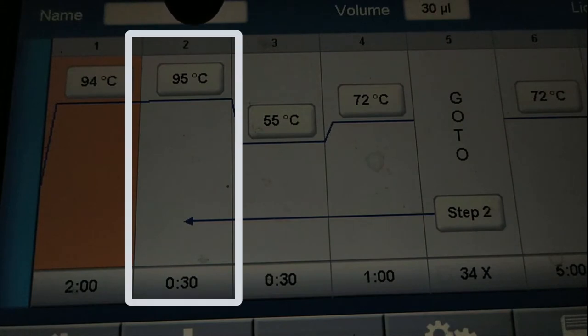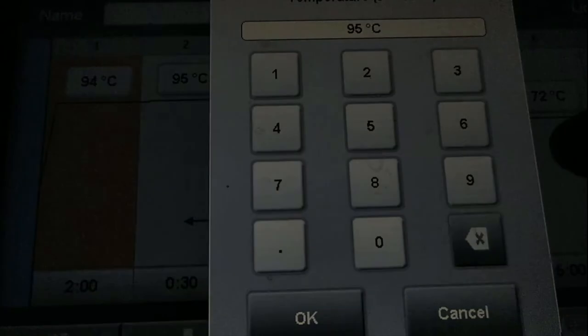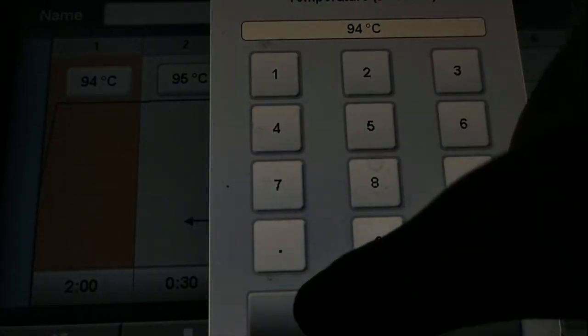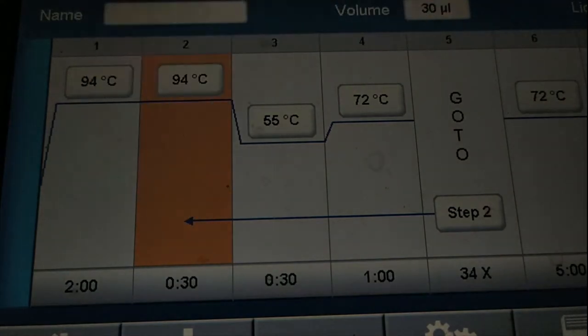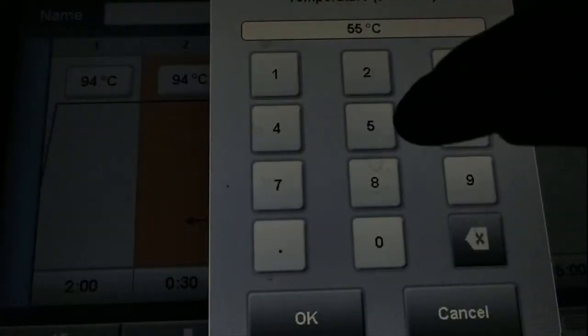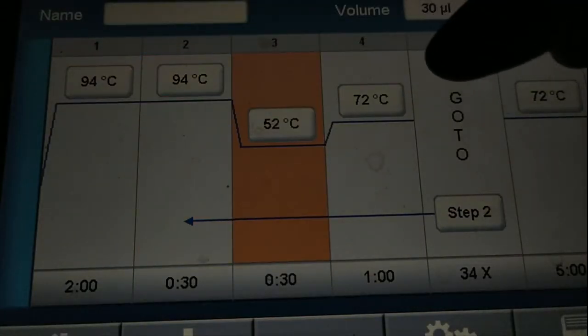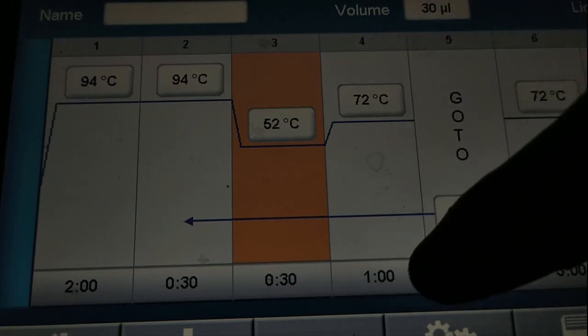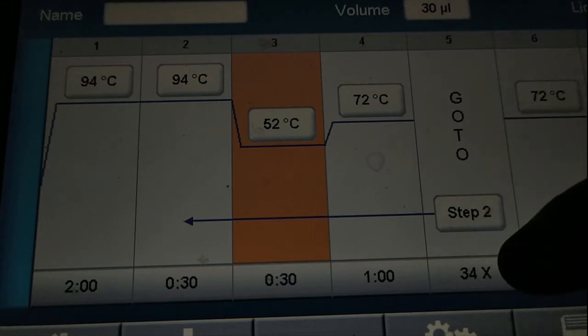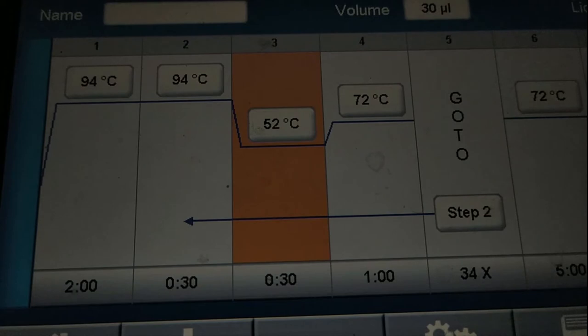Now we have the second step, the second column and it is also 94 Celsius degrees and you are going to have it for 30 seconds. Third step would be the annealing temperature and the annealing temperature is set to 52 Celsius degrees for 30 seconds. Finally we have the extension time at 72 Celsius degrees for 1 minute. Then we need to repeat the cycle for 34 times. So 34 plus 1 cycle from the beginning means 35 cycles. And on step 5 it will automatically go to the step 2 and go back and forth again and again for 34 times.